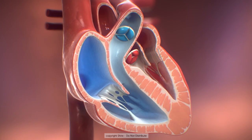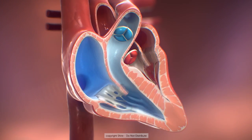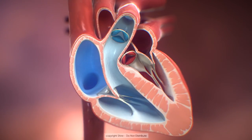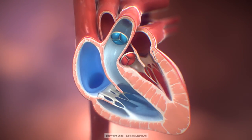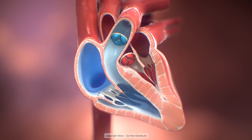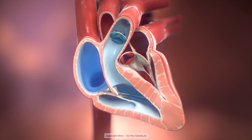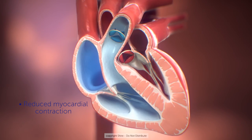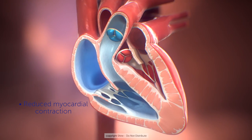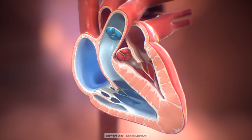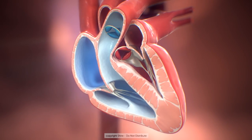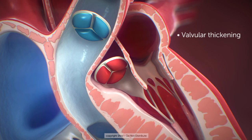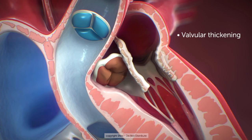Left ventricular hypertrophy is the most important manifestation of Fabry disease cardiomyopathy, as it leads to progressive functional impairment. Structural changes of the myocardium cause reduced myocardial contraction and reduced velocity of myocardial relaxation. Higher hemodynamic stresses in the left side of the heart result in valvular thickening and deformation.